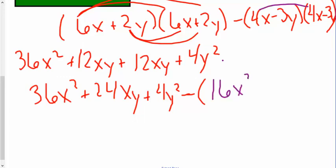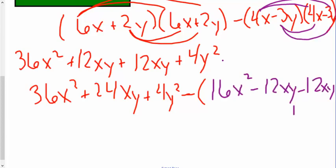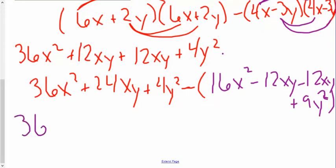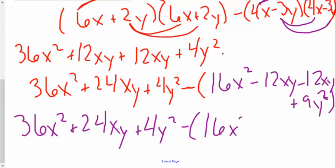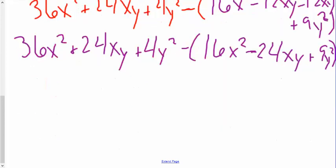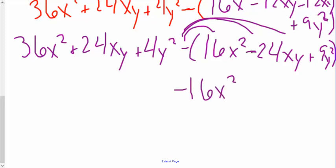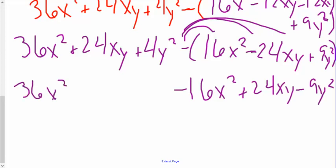Then I subtract that entire quantity foiled out as well. Foiling (4x − 3y)²: 4x times 4x gives me 16x squared, 4x times negative 3y gives me negative 12xy, another negative 12xy, and then a positive 9y squared. Simplifying: 16x squared minus 24xy plus 9y squared. Now I must distribute the negative: negative 16x squared, plus 24xy, minus 9y squared.